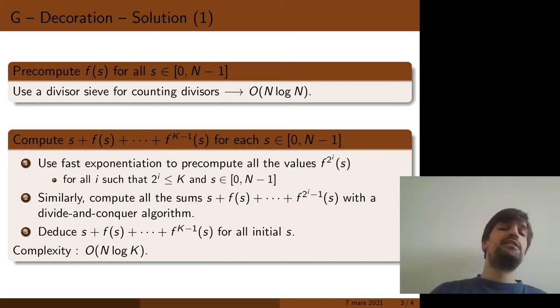Using a similar divide-and-conquer algorithm, you compute all the sums of the 2 to the i first iterated images of s for all s between 0 and n-1. Using this information, you can deduce the sum of all k first iterated images of f for all initial s between 0 and n-1. This algorithm can be implemented in big O of n log k.